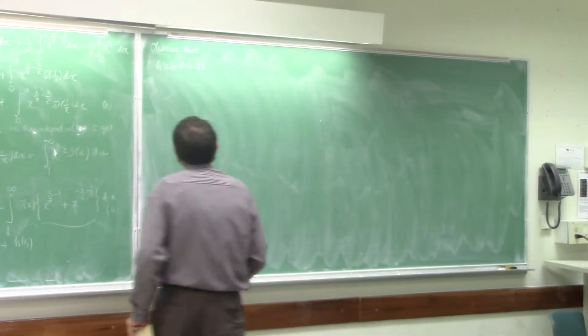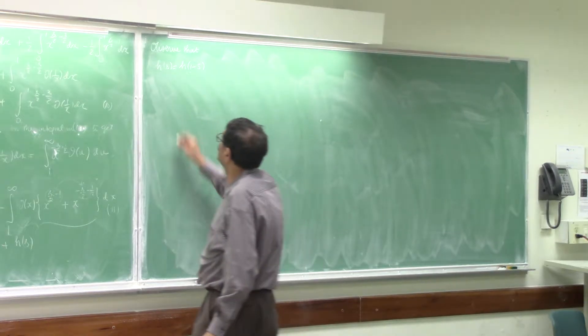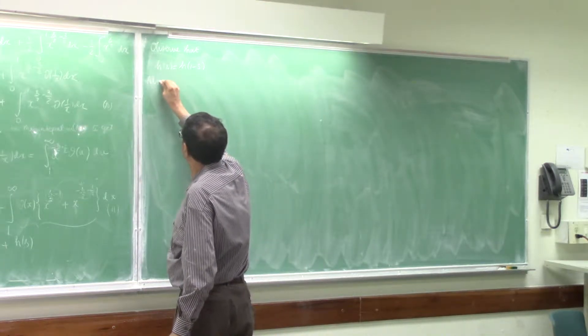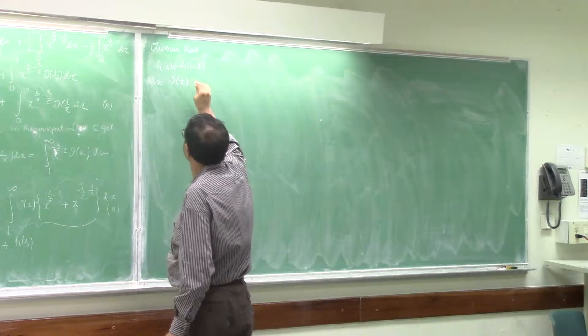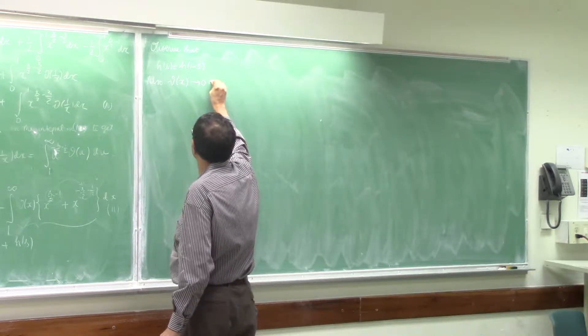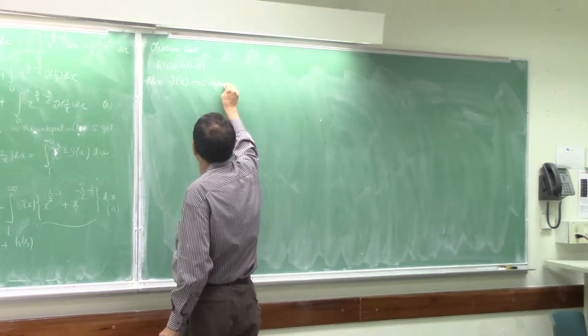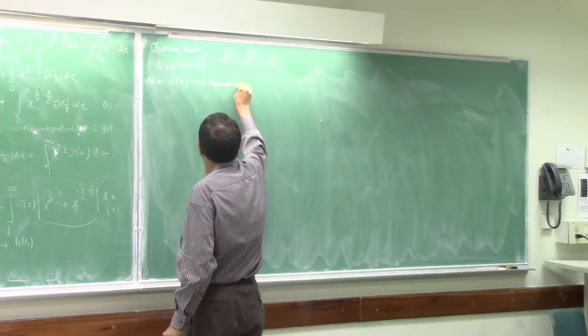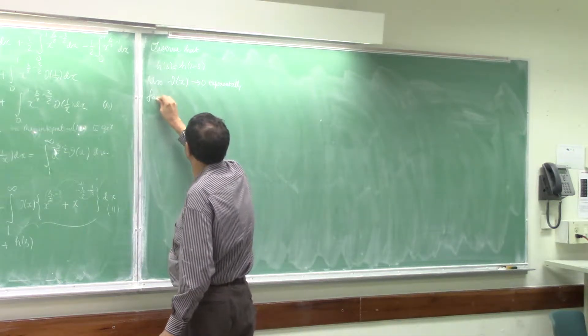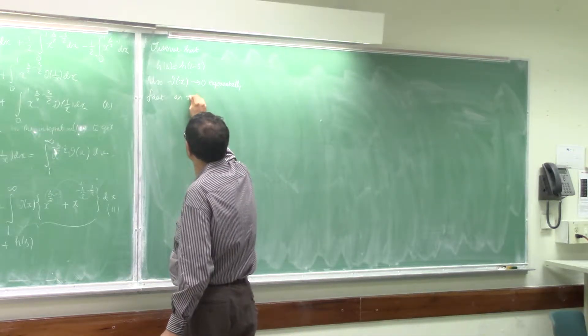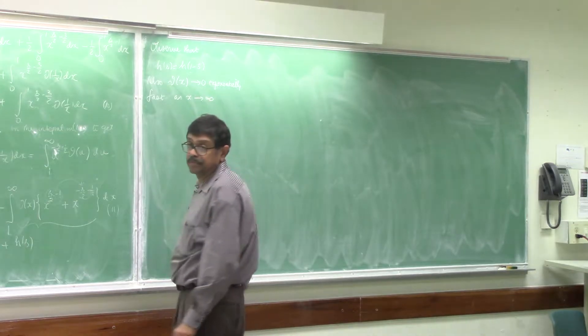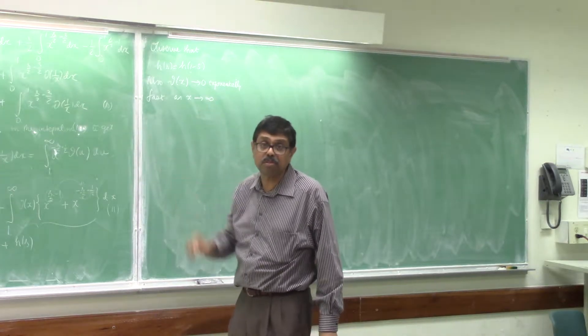So we say observe that h of n is 1 minus s. Also, theta of x tends to 0 exponentially fast as x goes to infinity. The first term is equal to minus x.